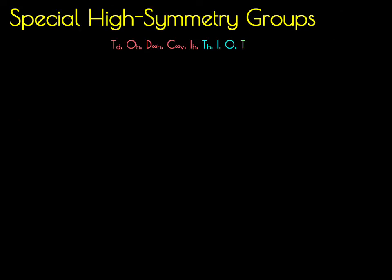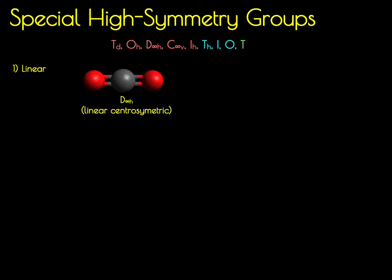The first question asks if the molecule is in a special high-symmetry group. If it's a linear molecule, it belongs to either the D∞H or C∞V point group. D∞H is centrosymmetric — it has an inversion center — so something like CO2. C∞V lacks that inversion center, so it's a linear molecule without inversion, like HCN. You can simply check whether the molecule is centrosymmetric or not to distinguish between D∞H and C∞V.